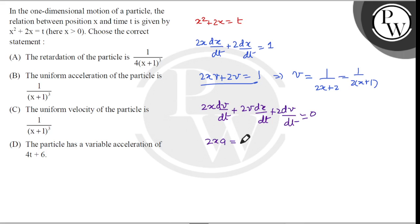2x into a plus 2v square plus 2a equals zero.